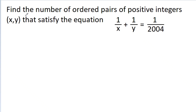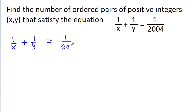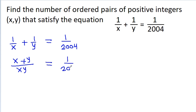In this video, we have to find the number of ordered pairs of positive integers x, y that satisfy the equation 1/x + 1/y = 1/2004. So the given equation is 1/x + 1/y = 1/2004, and it is (x + y) / (xy) = 1/2004.